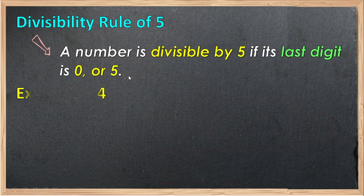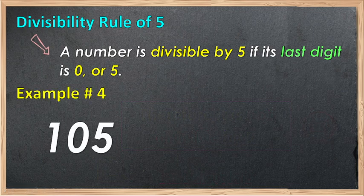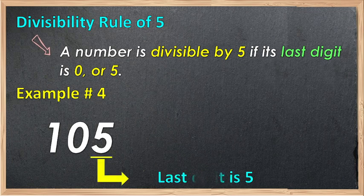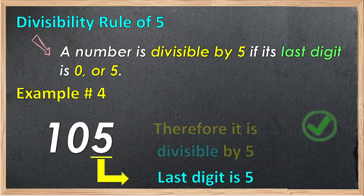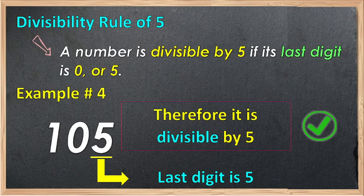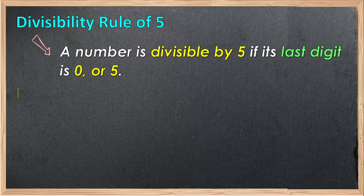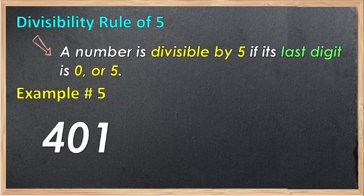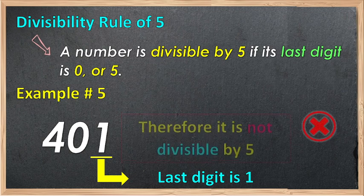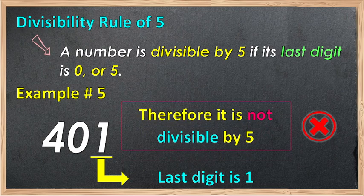Example number 4: 105. The last digit is 5. Therefore, divisible by 5. Example number 5: we have 401. The last digit is 1. Therefore, not divisible by 5, because it does not end with 0 or 5.